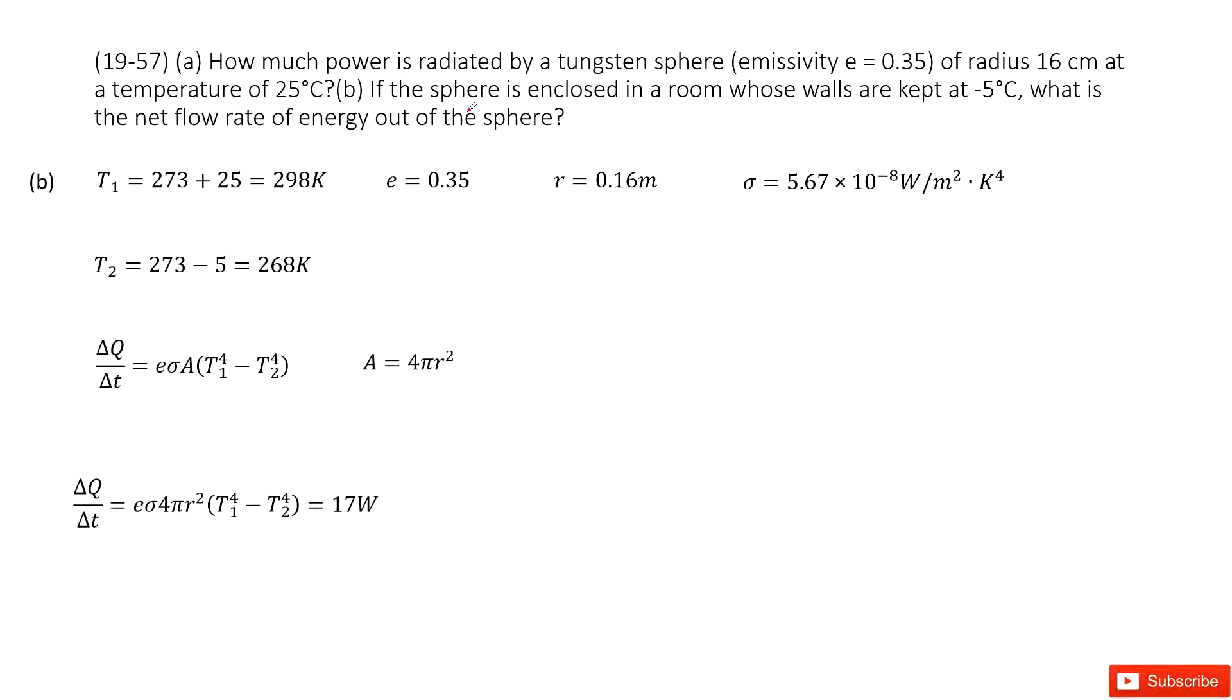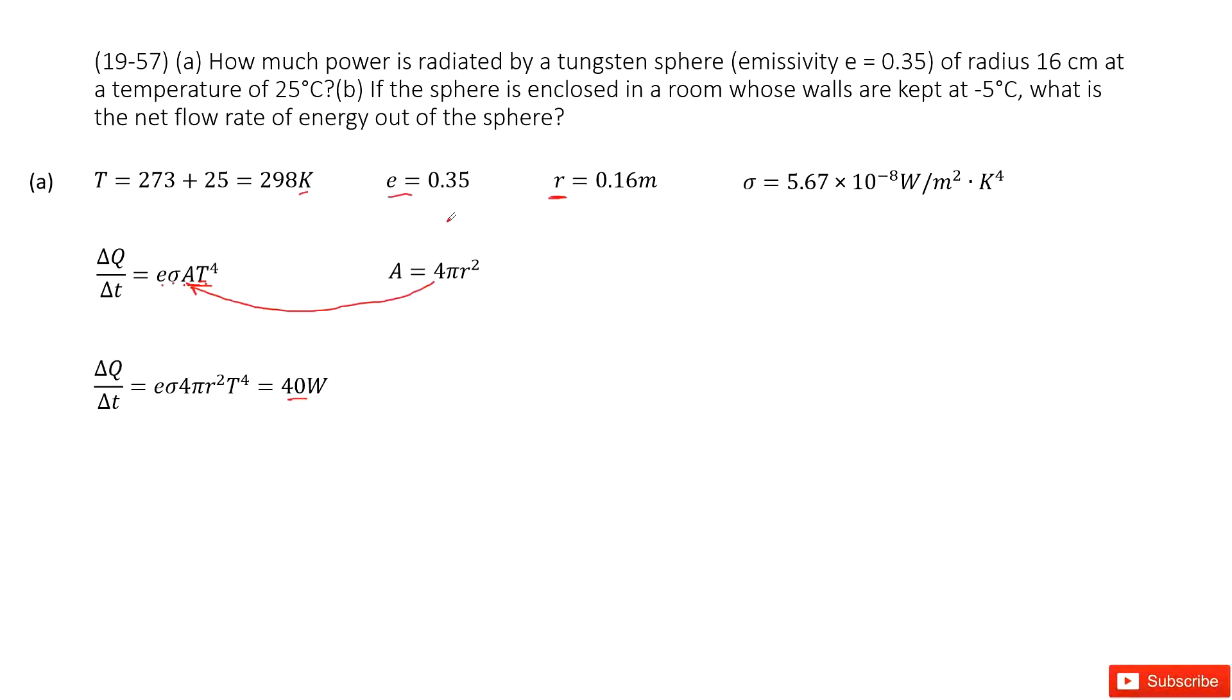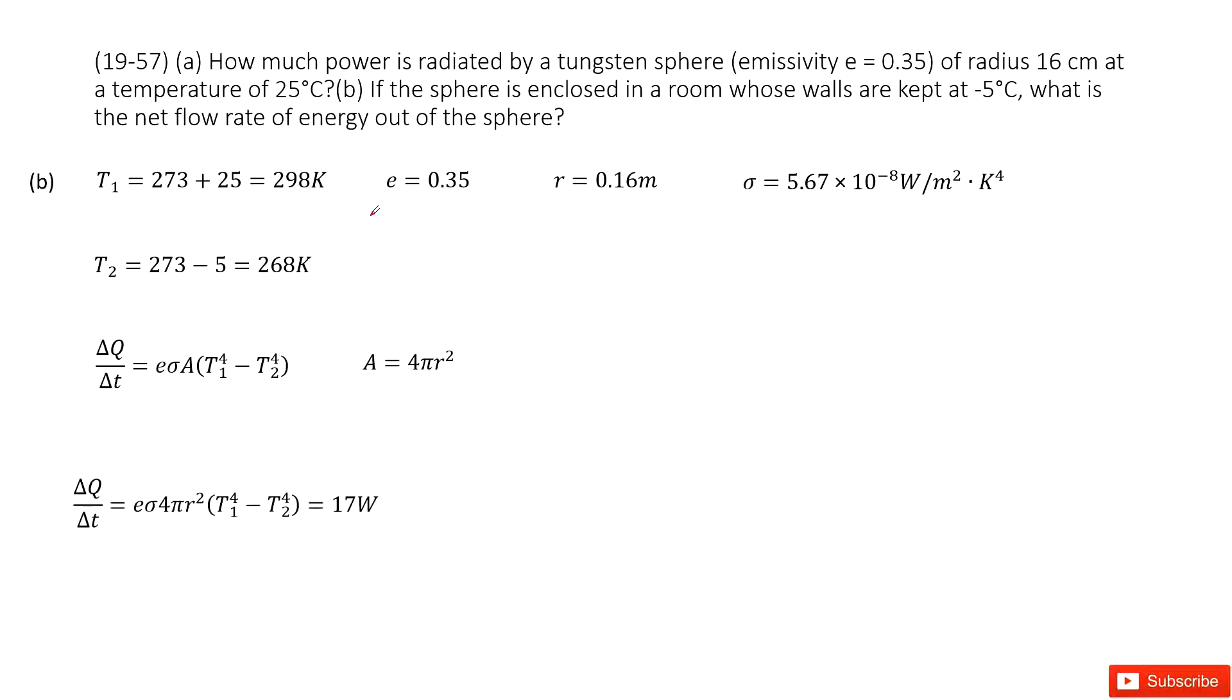The second one tells you if this sphere is enclosed in a room and the wall is kept at negative 5 degrees, and asks what is the net rate of energy out of the sphere. So in this one, we can see as we talked about before.